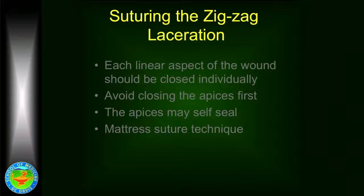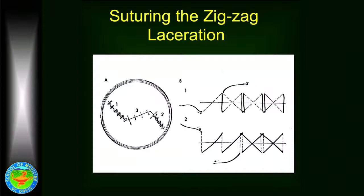Each linear aspect of a zigzag wound should be treated as a separate laceration. The logical thing most surgeons would do is try to close the apices first — that's actually not the correct approach, because the apices will often self-seal if the linear portion of the wound is closed first. A logical way to do this is to take the central expanse and close it with several sutures, then close the second leg the same way. You can use a running stitch or interrupted stitches — the principle is the same: close the linear portion of the laceration first.